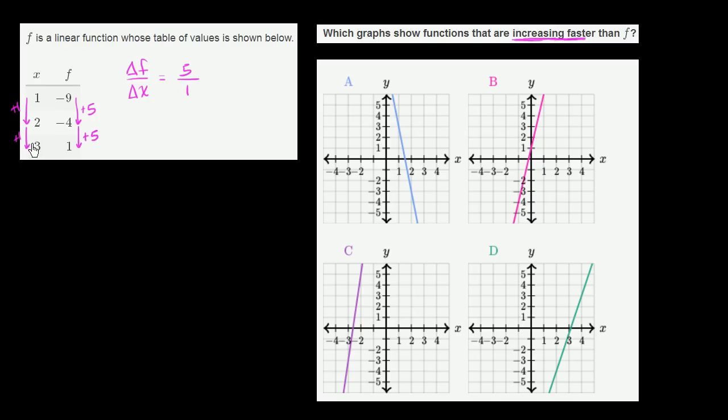If you start from this point and go all the way here, if you go plus 2 along x, you're going to go plus 10 along f. So it would be 10 over 2, which is still 5. Either way, the slope or the rate of change of the vertical axis with respect to the horizontal axis is 5 for f. Now let's see which of these increase faster.